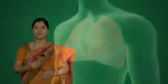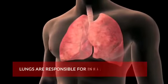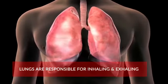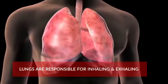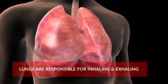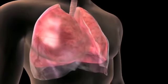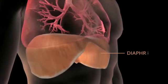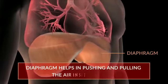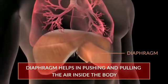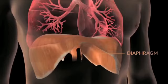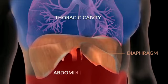As the lungs are responsible for the process of breathing — inhaling and exhaling — they could not either push out the air nor breathe in the air on their own. Here, a dome-shaped structure called the diaphragm helps in pushing and pulling the air inside the body. The diaphragm is a structure which separates the thoracic cavity and the abdominal cavity.